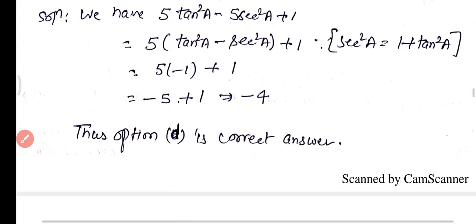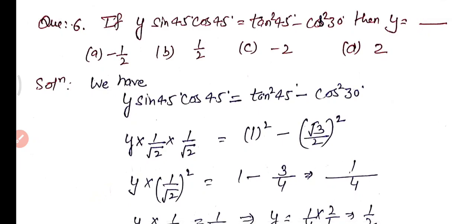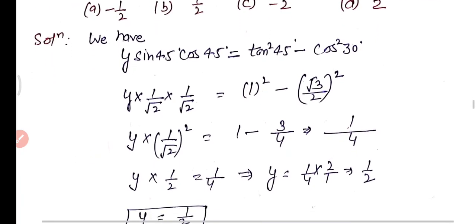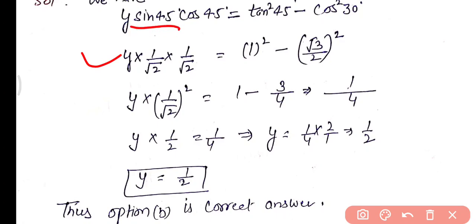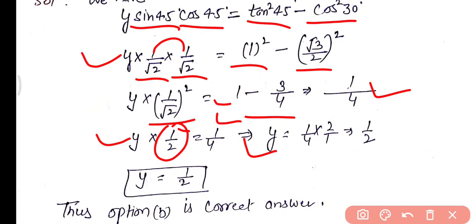Question 6: If y × sin 45° × cos 45° = tan²45° − cos²30°, then y equals? Substituting: sin 45° = 1/√2, cos 45° = 1/√2, tan 45° = 1, cos 30° = √3/2. So y × (1/√2)² = 1 − 3/4 = 1/4. That gives y × 1/2 = 1/4. Transposing: y = 1/4 × 2 = 1/2. Option B is the correct answer.